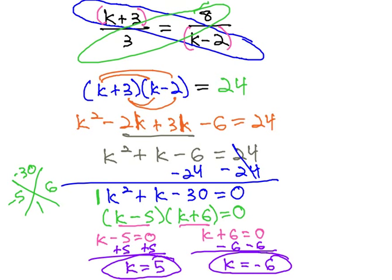And we have our final solutions for k that make this proportion a true equation. Turns out, there are two possible solutions for k: 5, or negative 6.